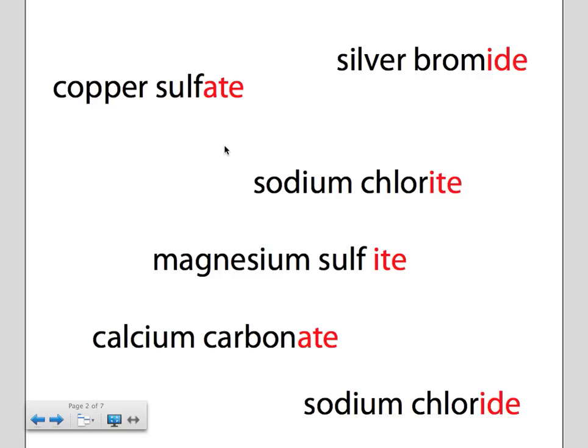So, we have, up the top here, silver bromide. So, what does that '-ide' tell you? Copper sulfate, sodium chloride, magnesium sulfite, carbonate, calcium carbonate, and sodium chloride. So, what do the '-ides', '-ites', and '-ates' mean?